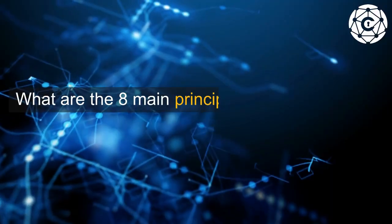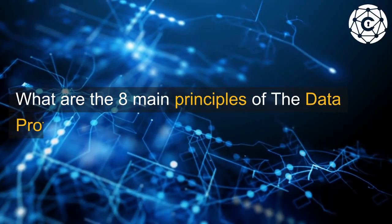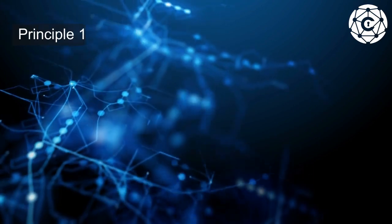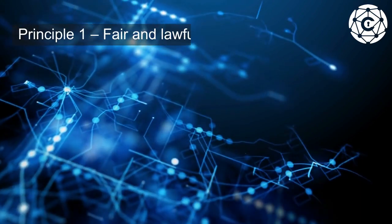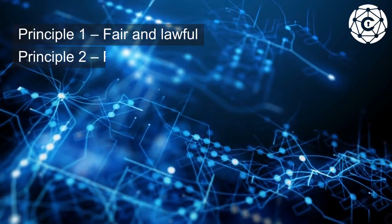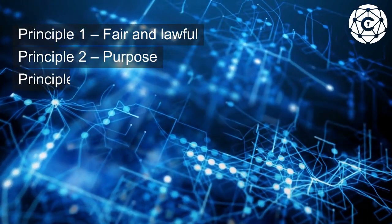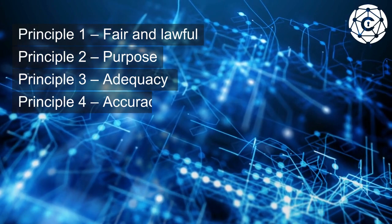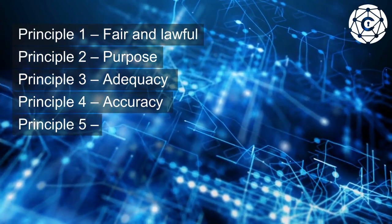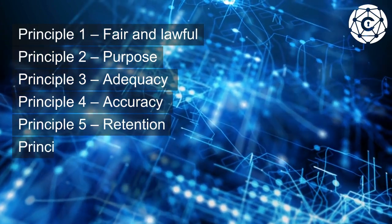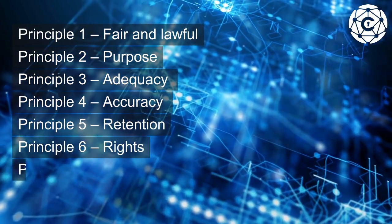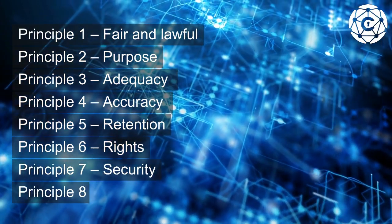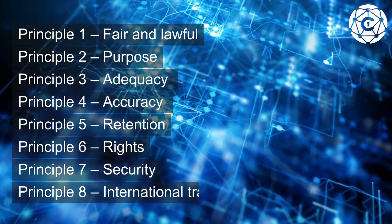What are the eight main principles of the Data Protection Act? Principle 1: Fair and Lawful. Principle 2: Purpose. Principle 3: Adequacy. Principle 4: Accuracy. Principle 5: Retention. Principle 6: Rights. Principle 7: Security. Principle 8: International Transfers.